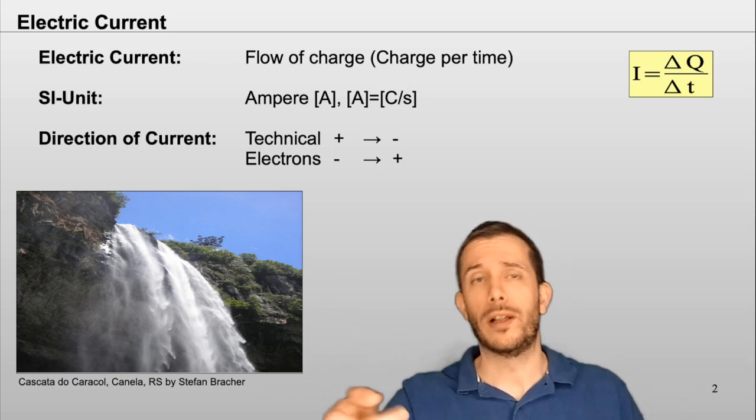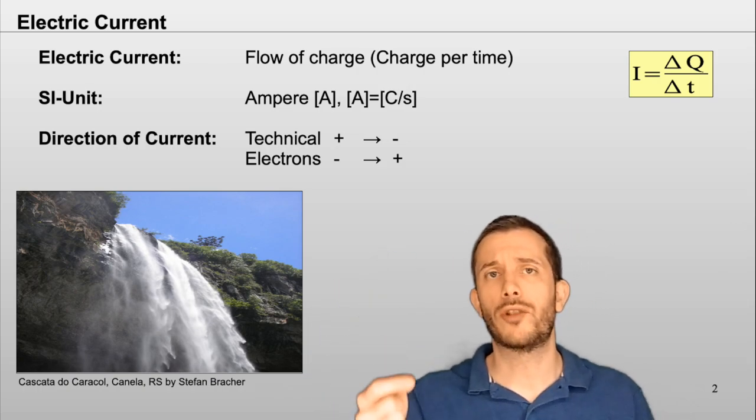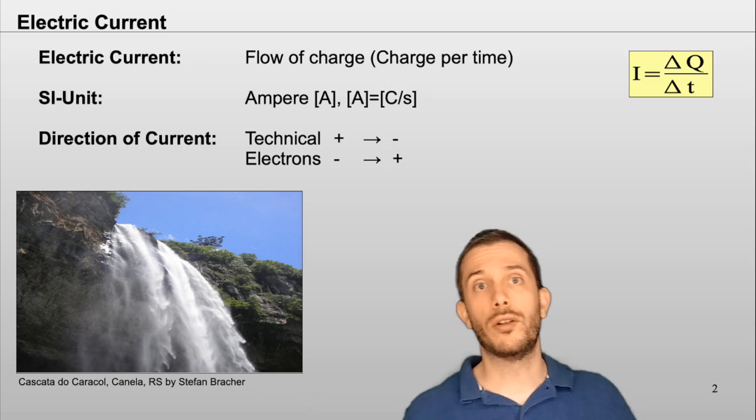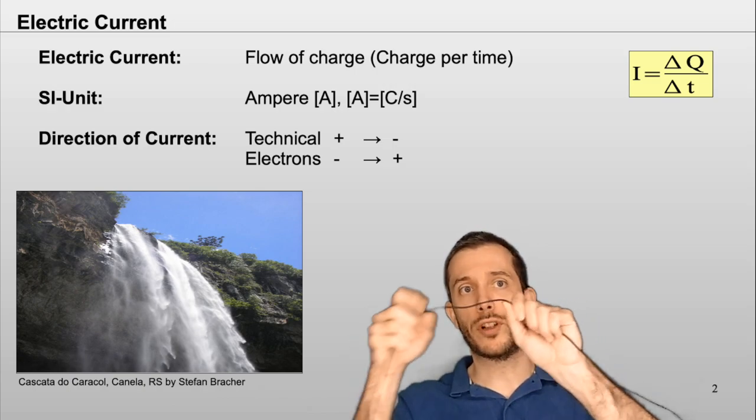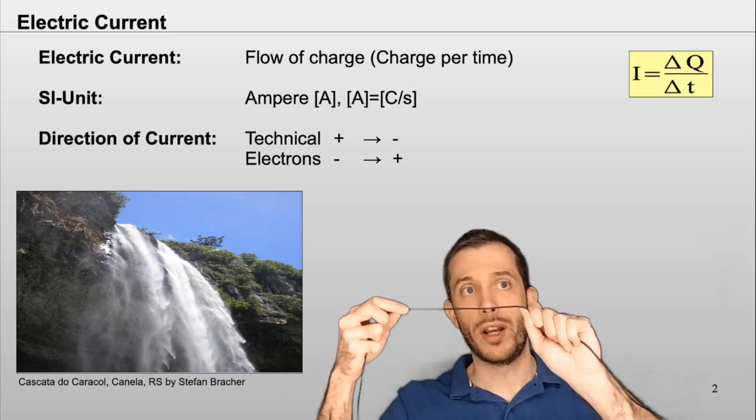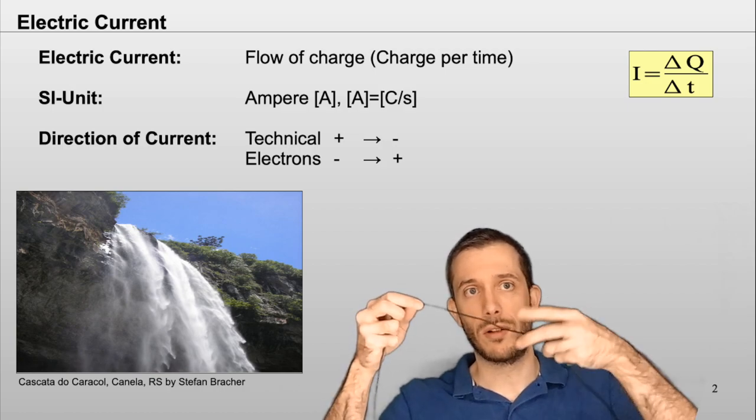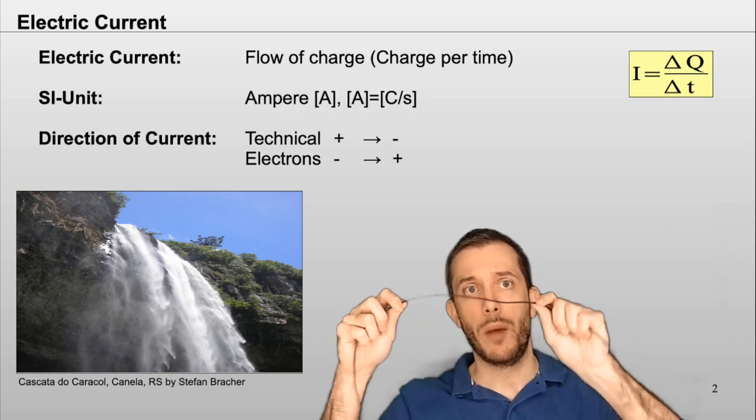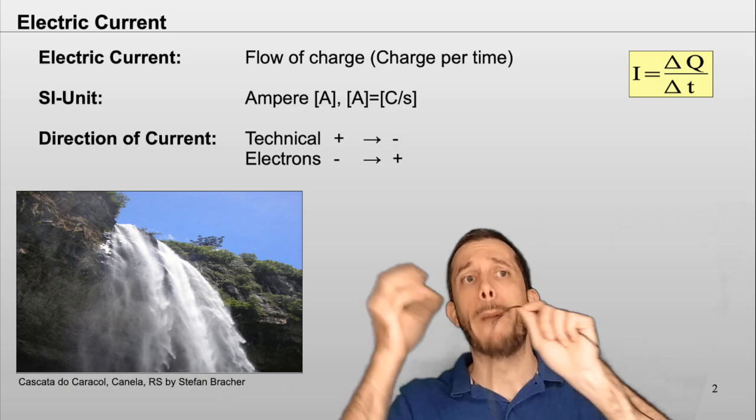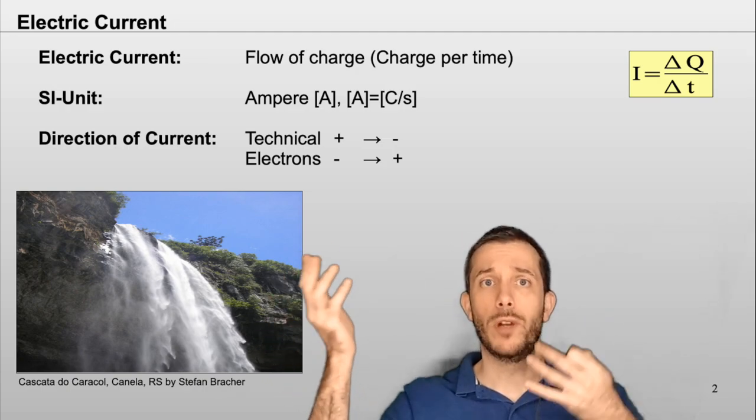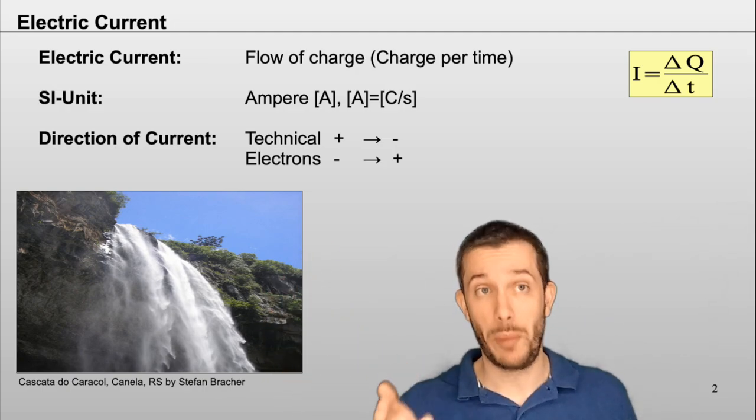So let's go one by one. Let's start with the electric current. The electric current is simply the amount of charge that travels through a wire per second. So how much charge is traveling per second, so coulomb per second, which gives us the unit amperes.